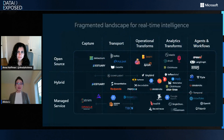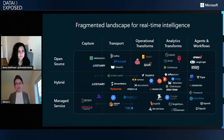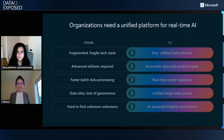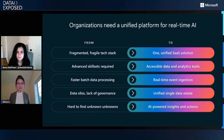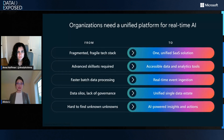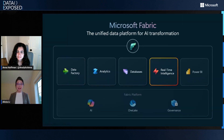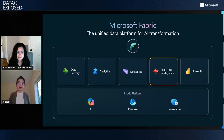However, as most of you already know, the market in this space still remains very fragmented and complex. To succeed, what our customers actually need is an easy-to-use, end-to-end solution that can empower everyone across the organization to gain the insights behind all of the data. Which is exactly what Fabric does, and real-time intelligence is part of the Fabric family.